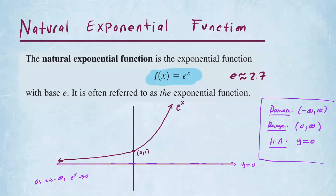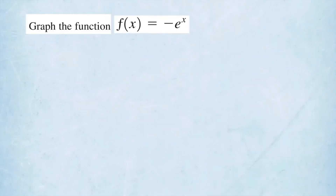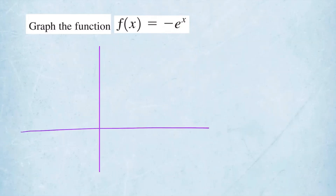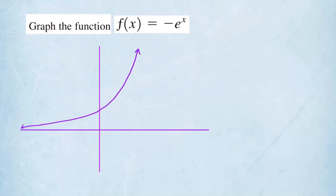Now let's go ahead and start sketching this function by applying transformations. We're graphing negative e to the x. There is a negative in the front, which indicates there is a reflection. We don't want to make a table of values — that's a very slow process. We like to use transformations of functions. So we start with e to the x, which looks like this. This is our graph for e to the x, and it has a horizontal asymptote at y equals 0.